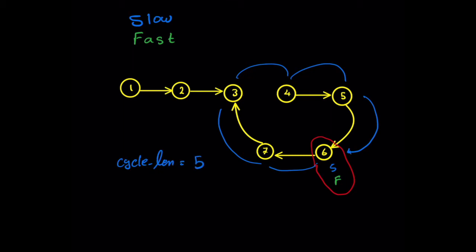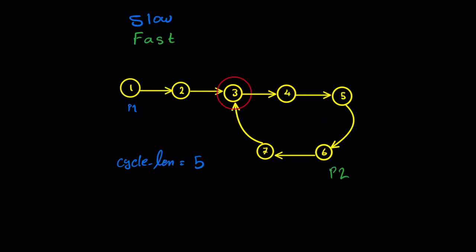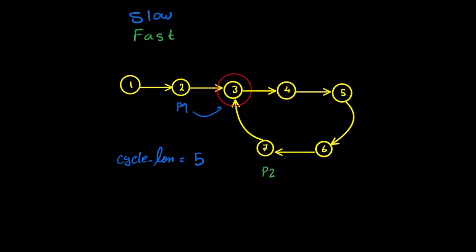To find the starting point of the cycle — which is node three in this example — we start from the beginning of the linked list again with two pointers: pointer one and pointer two. This time, because we know the cycle length is five, we move pointer two five steps ahead of pointer one. Now we start moving pointer one and pointer two one step at a time simultaneously until they meet each other. The point where they meet is the beginning of the cycle. They meet each other at three, so that is the beginning of the cycle. We can prove this mathematically but I won't do that here.